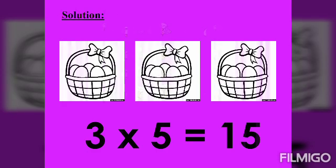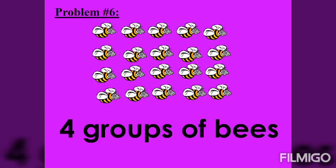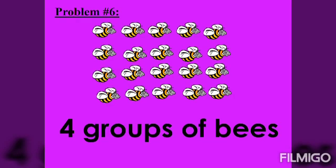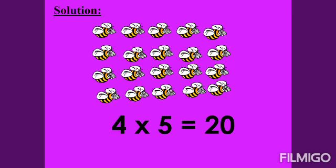Problem number 6. 4 groups of bees. 4 times 5 equals 20.